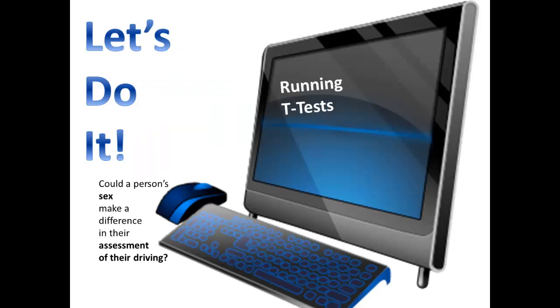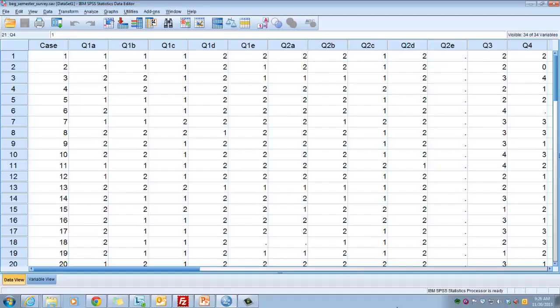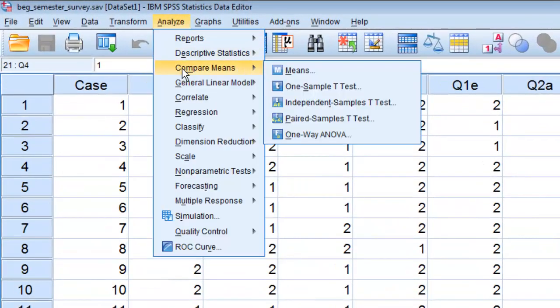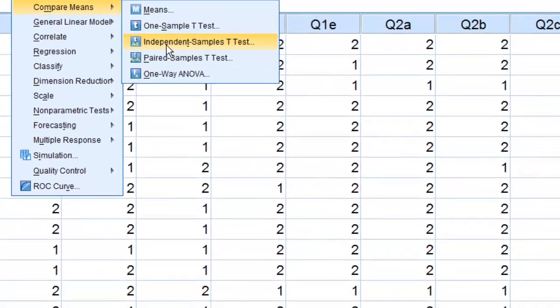We're talking about whether a person's sex could make a difference in their assessment of their own driving. So sex would be the independent variable, and assessment of driving is the dependent variable. Here we are in our data file. We'll do analyze, compare means, independent samples T-test.